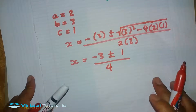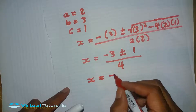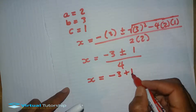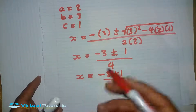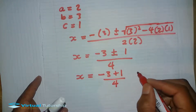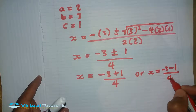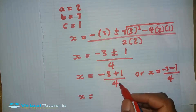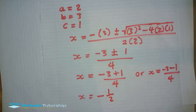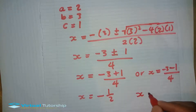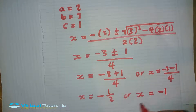Now we will get two values of x because of the plus or minus sign. The first one is minus 3 plus 1 over 4, which simplifies to minus 2 over 4, giving x equals minus one-half. The second x is minus 3 minus 1 over 4, which is minus 4 over 4, giving x equals minus 1.